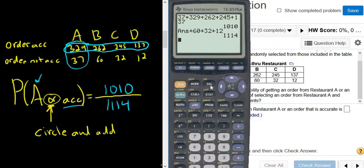And let's put this in the calculator. 1010 divided by 1114. Enter. So 0.907.